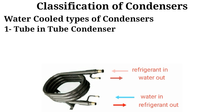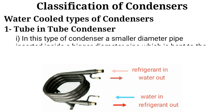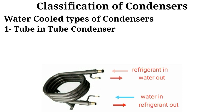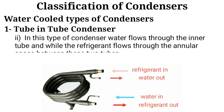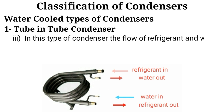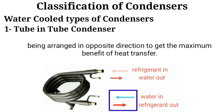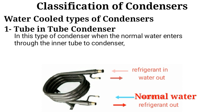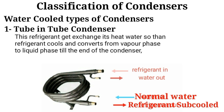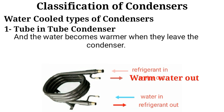In the tube-in-tube type condenser, a smaller diameter pipe is inserted inside a bigger diameter pipe, which is bent to the desired form. Water flows through the inner tube while the refrigerant flows through the annular space between the two tubes. The flow of refrigerant and water is arranged in opposite directions to get maximum benefit of heat transfer. When normal water enters through the inner tube, the refrigerant exchanges its heat to the water, cools, and converts from vapor phase to liquid phase by the end of the condenser, while the water becomes warmer as it leaves.